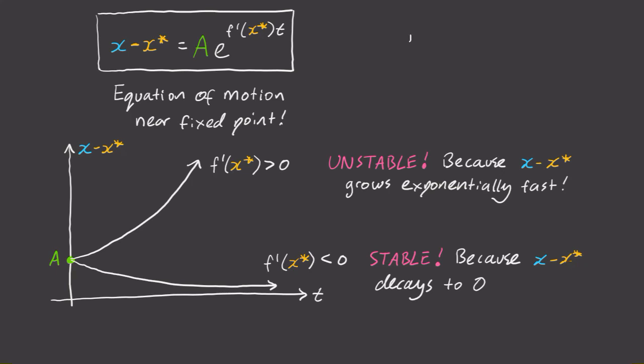Now, admittedly, you may notice that I've skipped a special case where f dash of x star is exactly equal to zero. In this special case, our linearization theory breaks down because the higher order terms can't be assumed to be negligible anymore. And so the stability needs to be analyzed on a case-by-case basis.